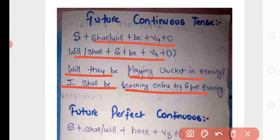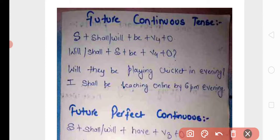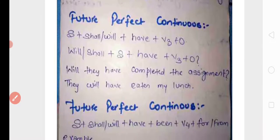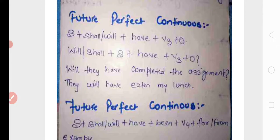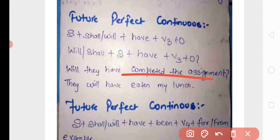Future perfect tense: structure is subject plus shall/will plus have plus V3 plus object — just like present/past perfect but with shall/will added. Examples: 'Will they have completed the assignment?', 'They will have eaten my lunch' (وو لوگ میرا lunch ختم کر چکے ہوں گے). It denotes a sense of uncertainty.